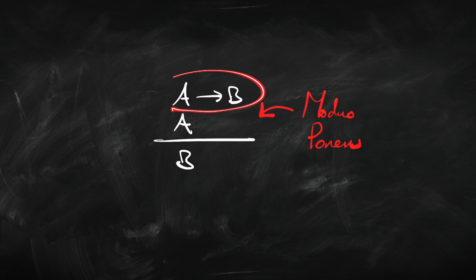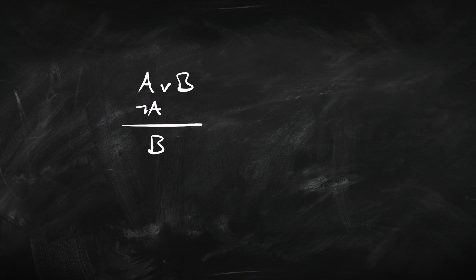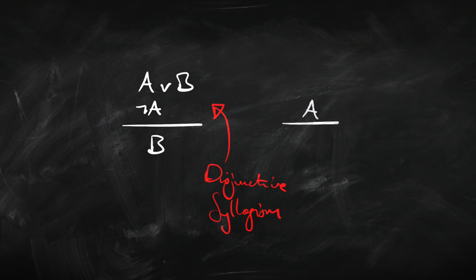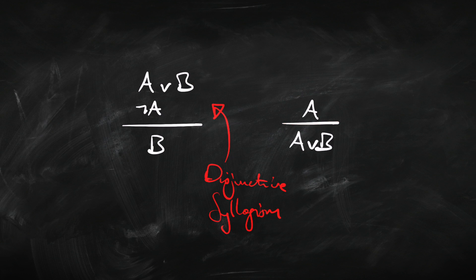Here are some rules involving disjunction — 'or'. If I have 'A or B' in my proof and I've also got 'not A', then I can infer B. This rule is known as disjunctive syllogism. And here's another rule involving 'or': if I've got any sentence A, I can infer from it 'A or B'. To make sense of that one, it might help to think back to the truth table — if A is true, then 'A or B' is true. But we're not so much justifying these rules in terms of the truth table right now; we're thinking about them directly in terms of acceptable inferences. If I have any sentence A, it's acceptable to infer 'A or B' from it.